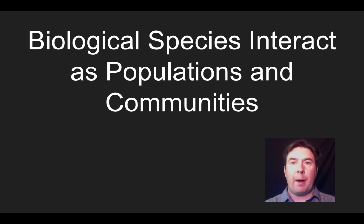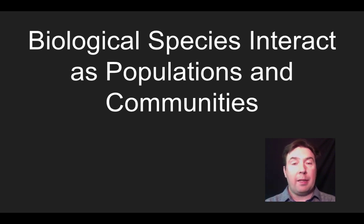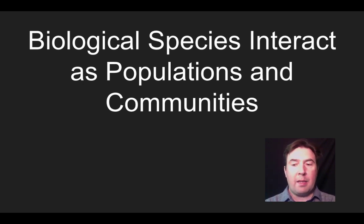In this video, we're going to look at how biological species interact as populations and communities as our primary theme. Within this, we're going to distinguish the different levels of organization within an ecosystem, analyze abiotic data and how it influences biotic factors, look at exponential and logistic population growth, apply that to human populations, describe density-dependent and density-independent limiting factors, and discuss different ways populations can interact — including predator-prey relationships, competition, and the three forms of symbiosis.